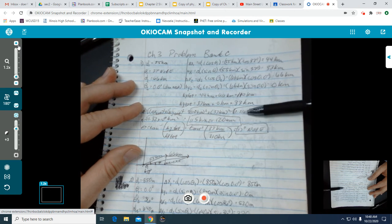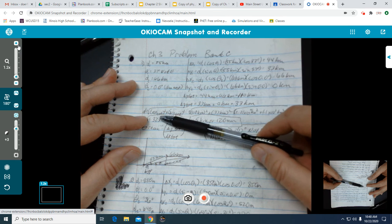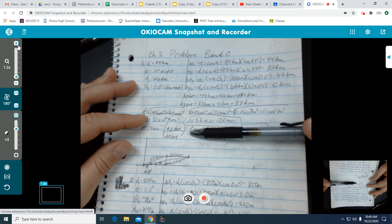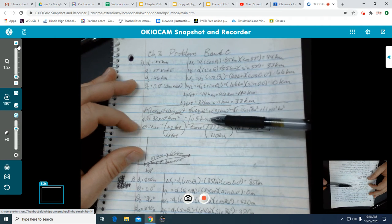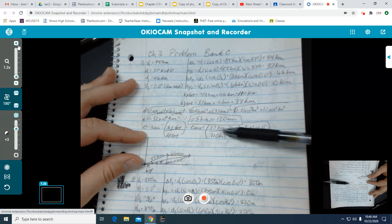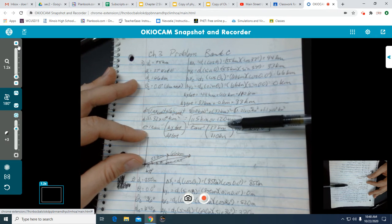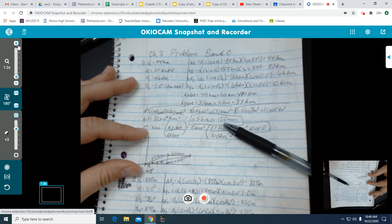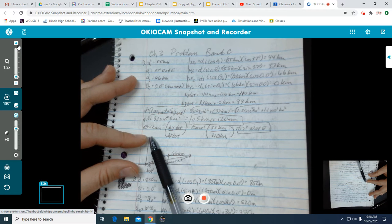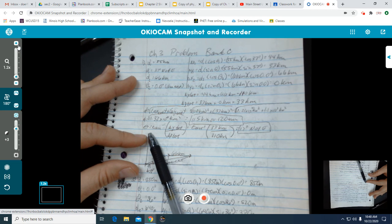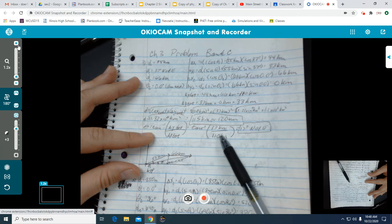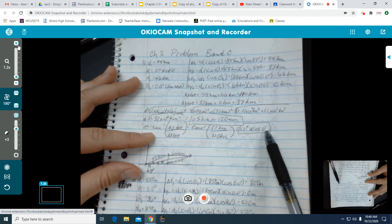Once we've determined those two components of our travels, we then sum up the x's, sum up the y vectors, and we get a total of 110 kilometers for the x and 33 kilometers for the y. Now that we have our total sums of our x and y, we can then use Pythagorean theorem to help solve for our overall resultant vector or our displacement.